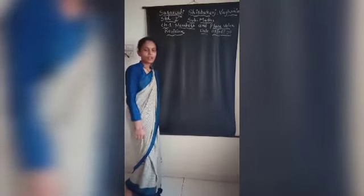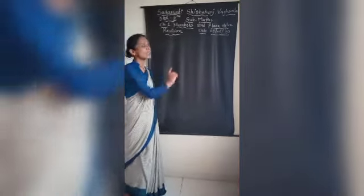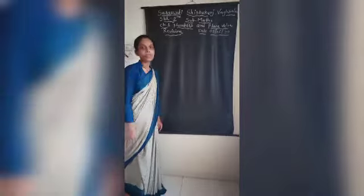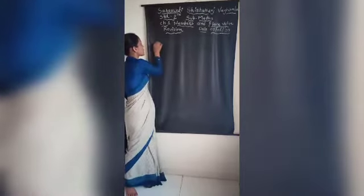Hello students, how are you? Jai Hind. I hope you enjoyed your mini vacation. Today's date is 5th June, and in second standard we revise chapter number one — Numbers and Place Value. We already learned this chapter, so today I will briefly revise it.